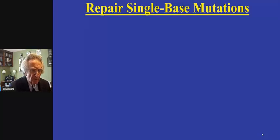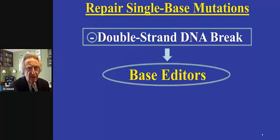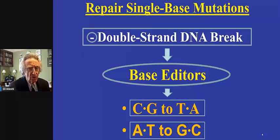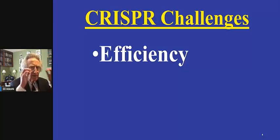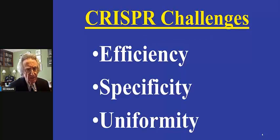To repair single-base mutations, we generally can avoid double-strand DNA breaks by using so-called base editors, which have the capacity to convert CG pairs to TA counterparts, or AT pairs to GC counterparts. Altogether, the CRISPR challenge is mostly about efficiency of editing, specificity of editing, and the uniformity of editing.